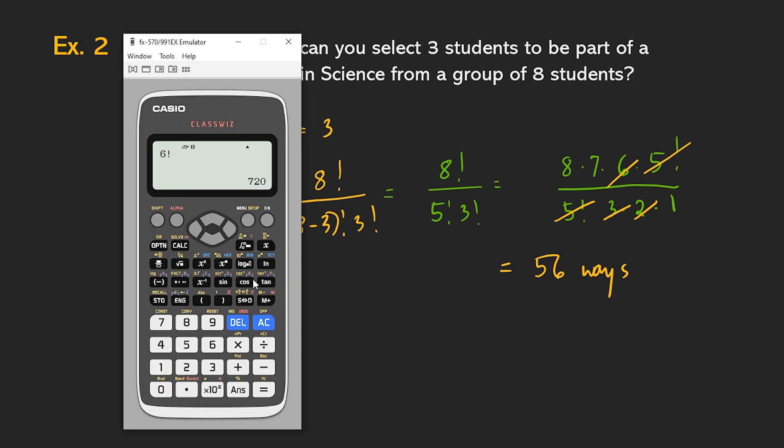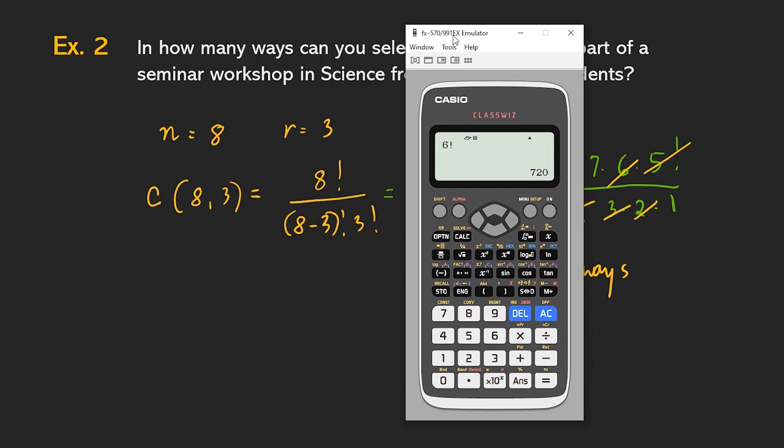Now, let's check this using our calculator. Meron din combination dito, yung taas naman yung divide. So, we have eight, combination. So, shift, tapos, divide, three. So, the answer is fifty-six.